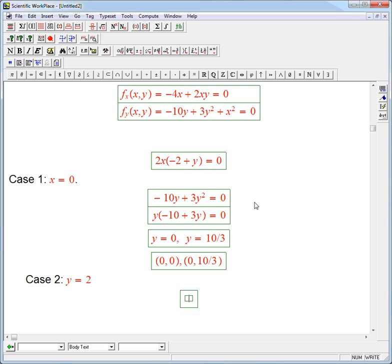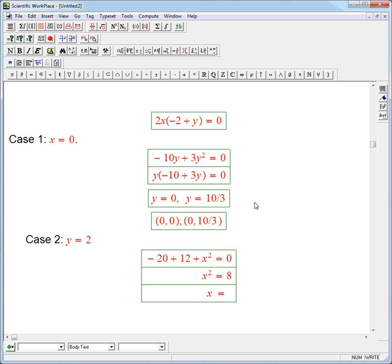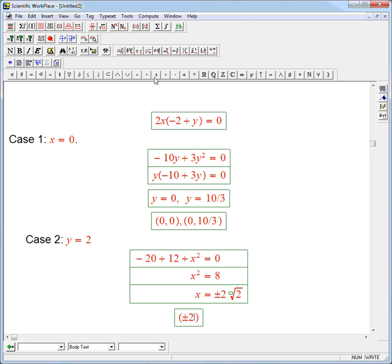We're going to get minus 20 plus 12 plus x squared equals 0, or x squared equals 8, and so x equals plus or minus root 8, which is 2 root 2. But what are the points? These were under the assumption that y was equal to 2, so we're going to get plus or minus 2√2, comma 2. That's actually two more points.